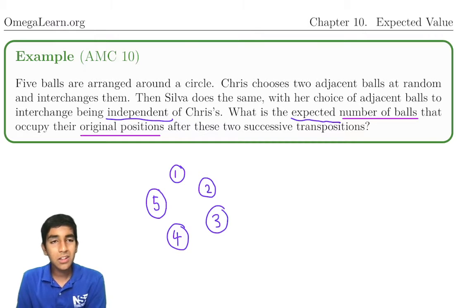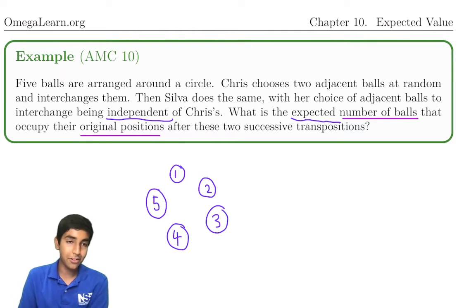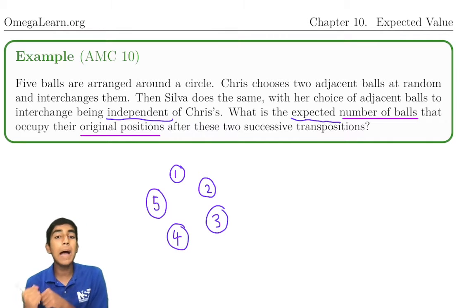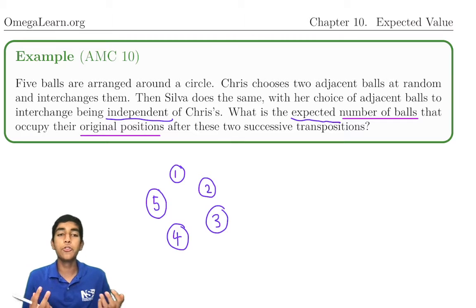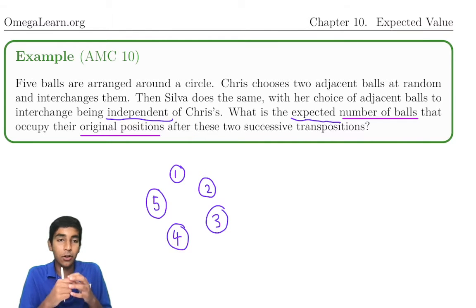So let's use linearity of expectation. I know it's a fancy word, but it's super powerful. Let's find the probability that each individual ball will be back to its original position after those two transpositions. So what are the ways for a ball to stay in its original position, or go and come back even?